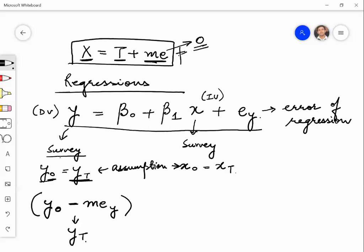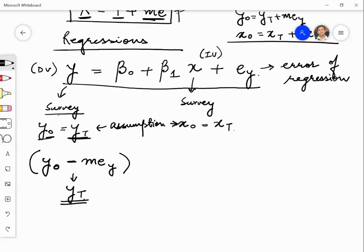And this becomes y true, right? Because if I were to write the equation, y observed is equal to y true plus measurement error of y. Similarly, x observed is equal to x true plus measurement error of x. So how can I write what I need to do? Essentially, I need to regress the actual true constructs and not the observed variable. So I need to do this regression on my data.